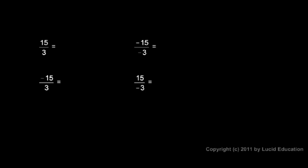Here are some examples. Fifteen divided by three — both numbers are positive, so the result is positive five. Negative fifteen divided by negative three — here we have two negative numbers, so the result is again positive: positive five.